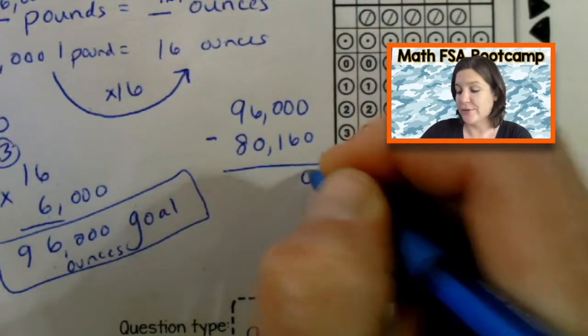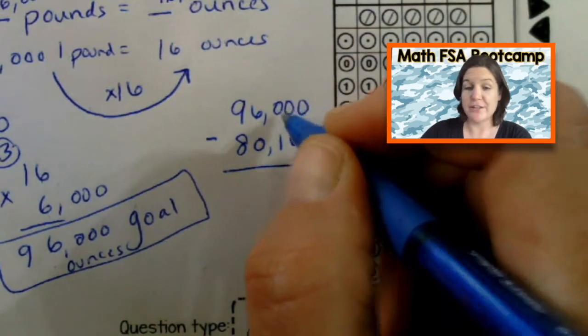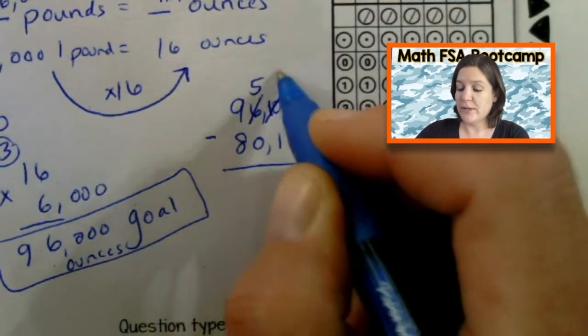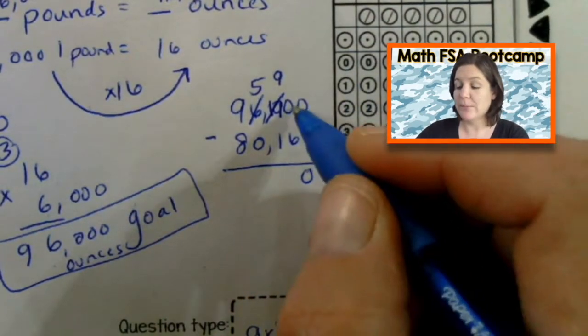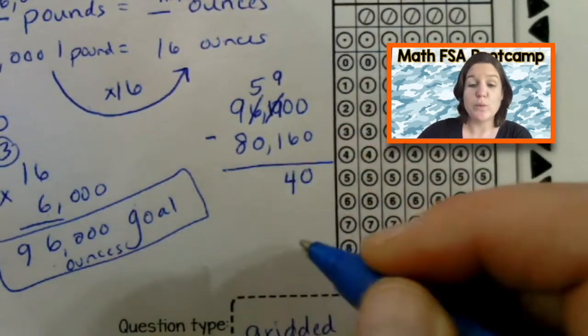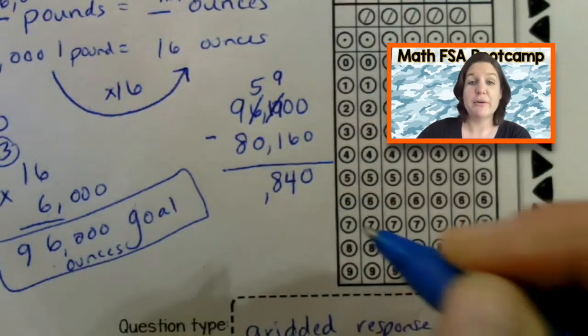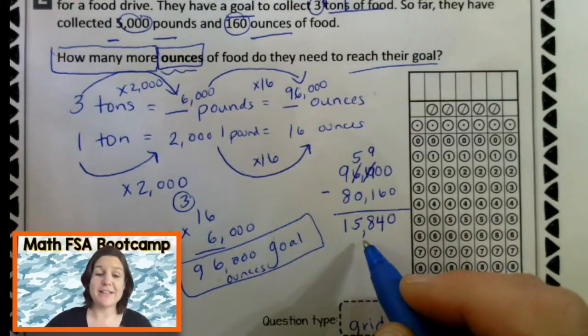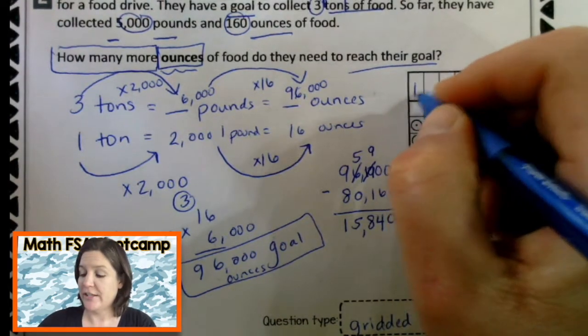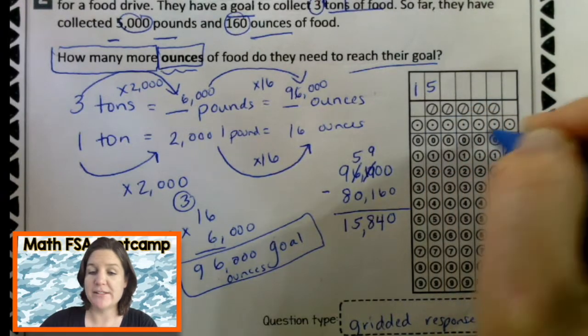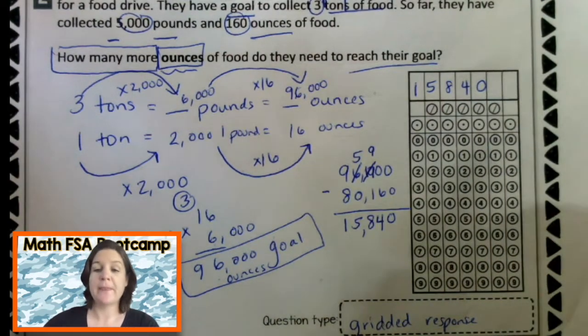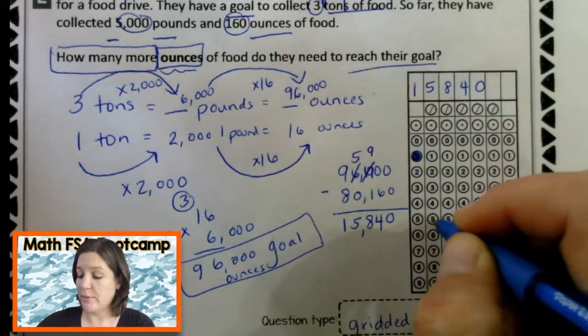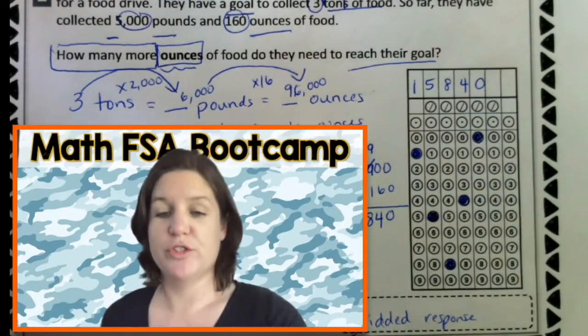0 minus 0 is 0. 0 minus 6. We need to regroup, don't we? But there's nothing right there. So, let's go to the 6. Take 1. That becomes a 5. Give 1. That becomes a 10. Take 1. That becomes a 9. Give 1. That becomes a 10. Now, 10 minus 6 is 4. 9 minus 1 is 8. 5 minus 0 is 5. And 9 minus 8 is 1. So, the answer is 15,840 is how many ounces they still need. I'm going to jot that in. And remember, there is no comma to it. These are periods there. Do not make these into commas. Or you could have done 0, 4, 8, 5, 1. Now, if I do not bubble these in, it will be marked wrong. So, I need to make sure that I bubble it in using not a blue pen, but a number 2 pencil. Just. Like. That.